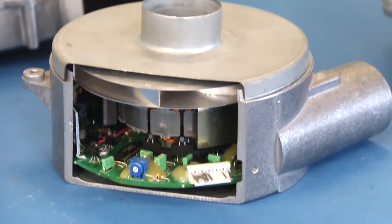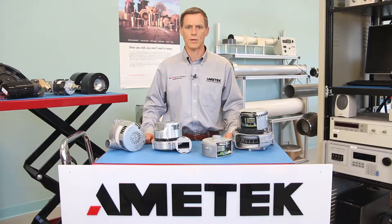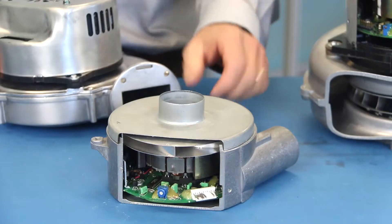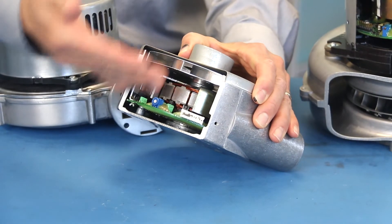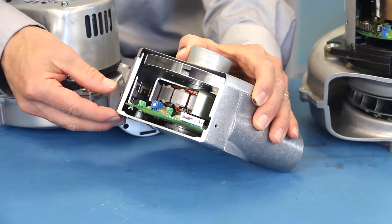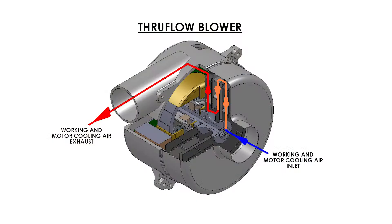A through-flow blower design does not have a steel motor enclosure, and the power connection is made through the die-cast aluminum blower housing. In a through-flow design, the working air and motor electronics cooling air are one and the same, being intermixed within the blower. This provides for a smaller overall blower package.